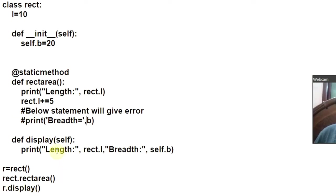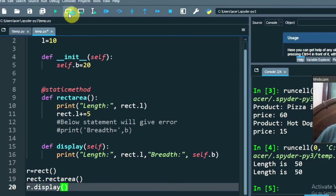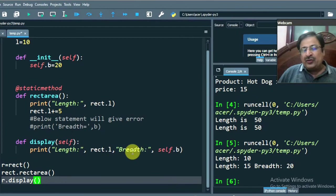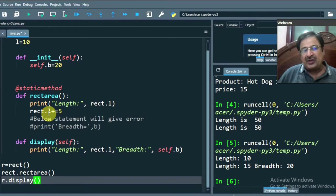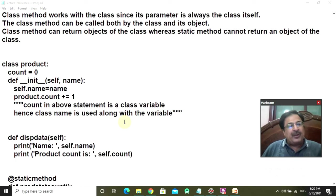When you invoke R.Display, it displays the class attribute, which is now 15 because it was modified through the static method. The breadth value is 20. This is the normal instance method and this is the static method. Let us copy and run it. Length is 15 — because by invoking the static method you modified the class attribute to 15. And breadth is 20.